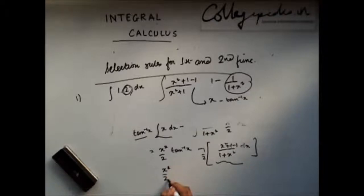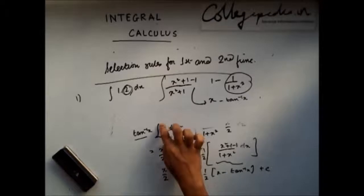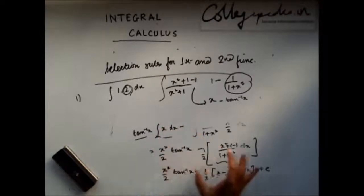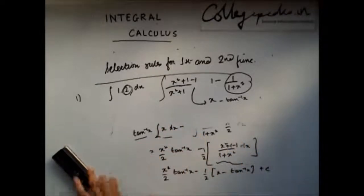So my final answer is (x²/2)tan⁻¹(x) minus half of (x - tan⁻¹(x)) plus a constant c. So you see that my task becomes simpler because I took x as my second function which was easily integrable.